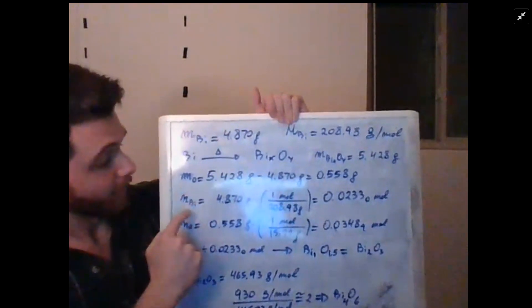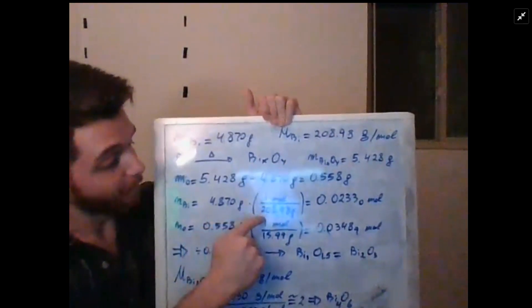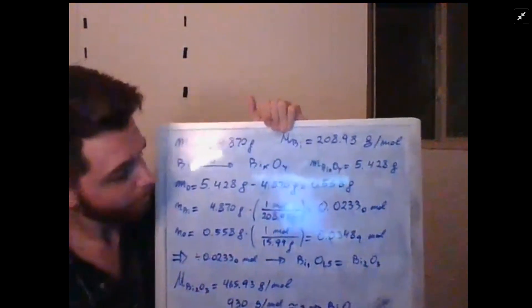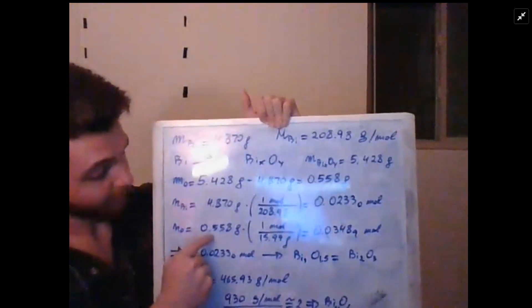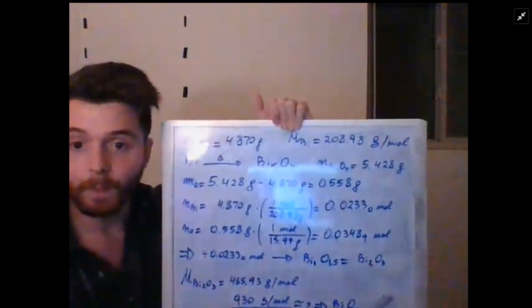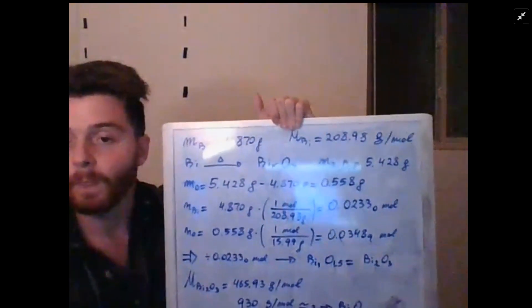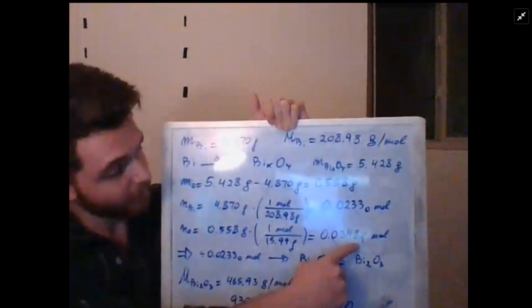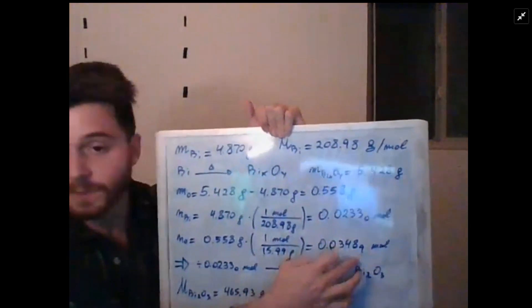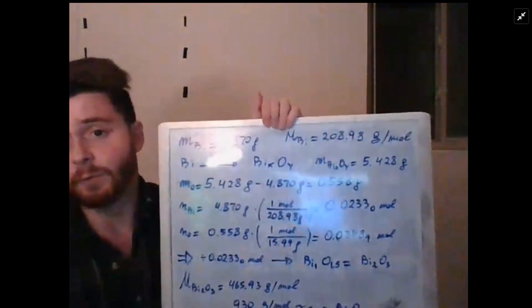Now we can measure the moles of bismuth. We have 4.870 grams of bismuth divided by the molar mass, which gives us 0.0233 moles of bismuth. We have 0.558 grams of oxygen divided by 15.99 grams per one mole of oxygen, and we get 0.03489 moles. This is the notation I was mentioning earlier—since we don't really care about significant figures in between, we can use subscripts to denote one or two more values that we want.